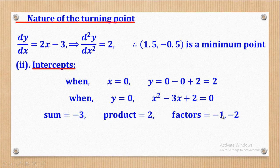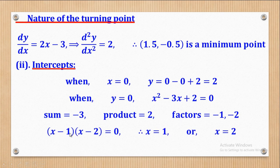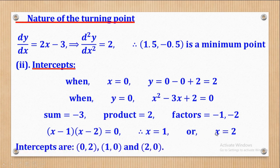Those factors are -1 and -2. Therefore, the factorization will be (x - 1)(x - 2) = 0. When (x - 1) = 0, x = 1, and when (x - 2) = 0, x = 2. So the two values of x corresponding to y = 0 are 1 and 2. Therefore, the intercepts are (0, 2), (1, 0), and (2, 0).